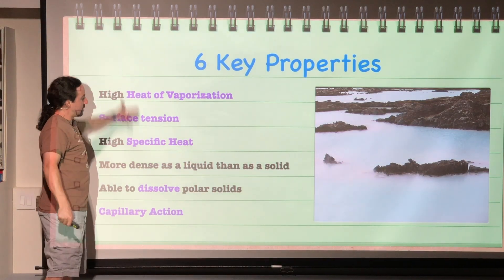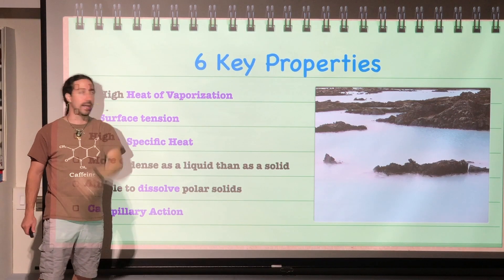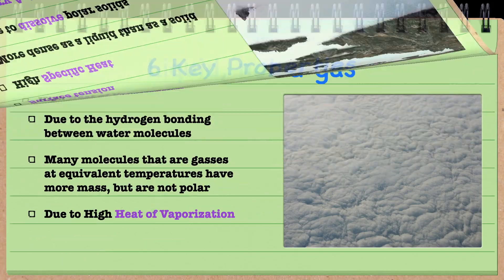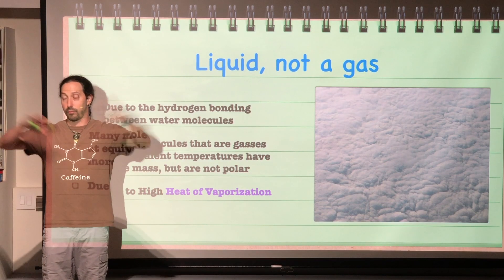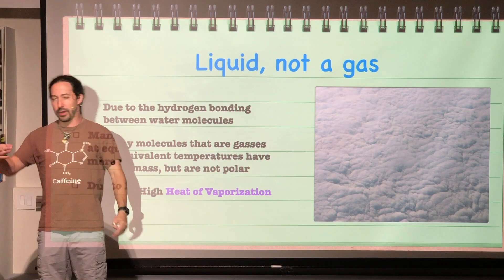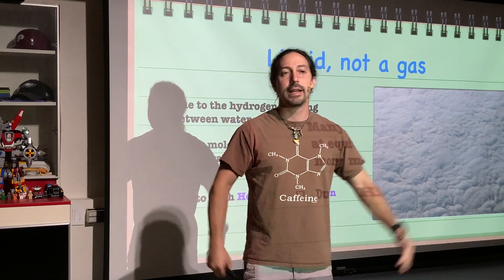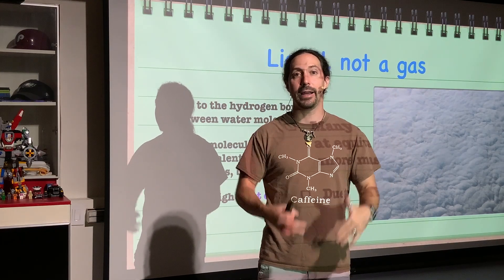These are the properties of water that were on our last slide, and now we are going to be looking at each one of them one at a time. Starting off with high heat of vaporization. What does that mean? Well, it's a liquid — it's not a gas. When we look at this world, a lot of it is covered in water. What's really neat is that for its mass, water shouldn't be a liquid.